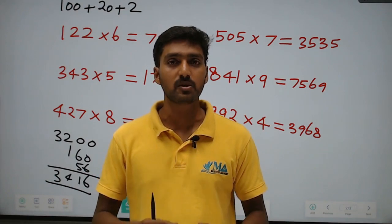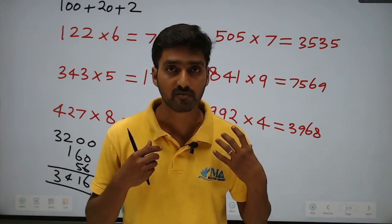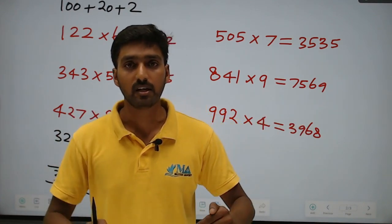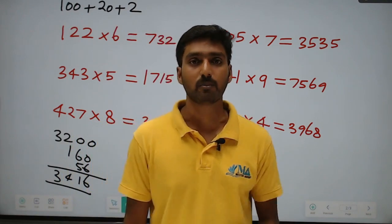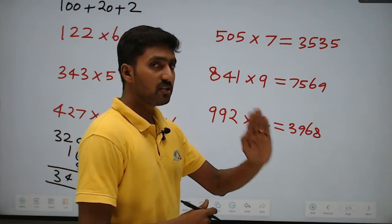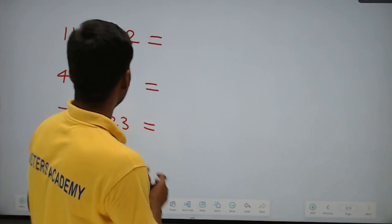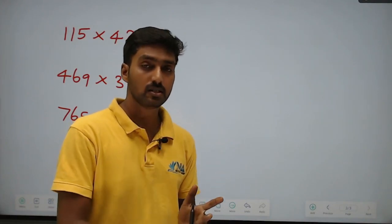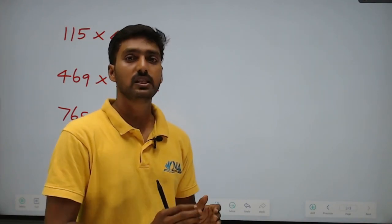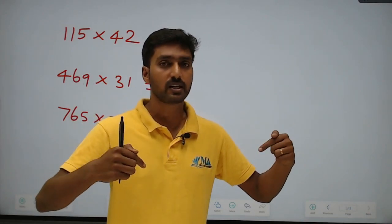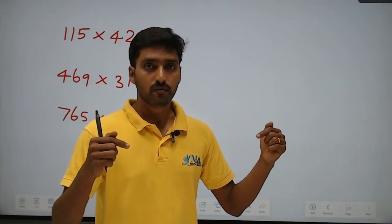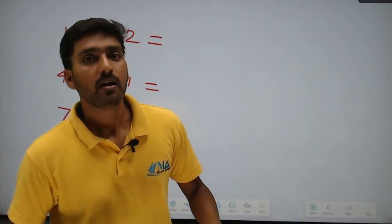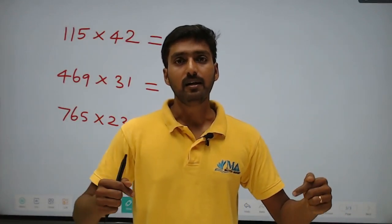3-digit numbers into 3-digit numbers has a shortcut that we discussed in a previous video. We will discuss that before — the video link is in the description box. We will click on it and see the shortcut. Next, 3-digit into 2-digit. We also need single-digit into 2-digit, single-digit into 3-digit, 2-digit into 2-digit, and 3-digit into 3-digit — all video links will be in the description box. Subscribe to the Masters Academy YouTube channel.